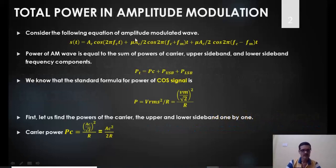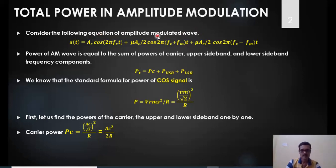In amplitude modulation, the time-domain equation consists of one unmodulated carrier, an upper sideband with amplitude equal to μAc/2, and a lower sideband with amplitude equal to μAc/2. These amplitudes are all peak amplitudes.